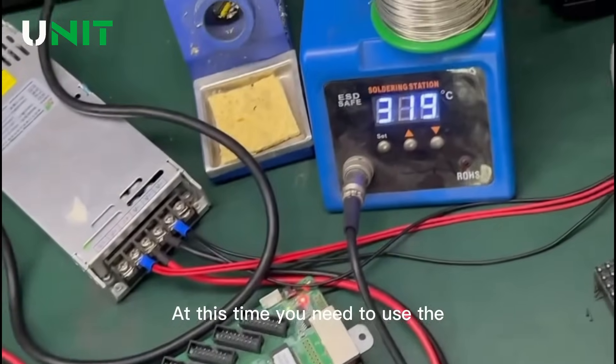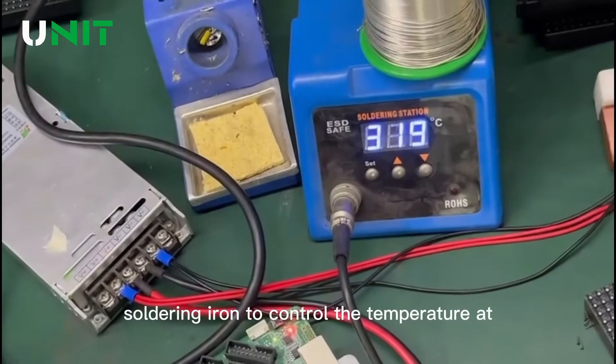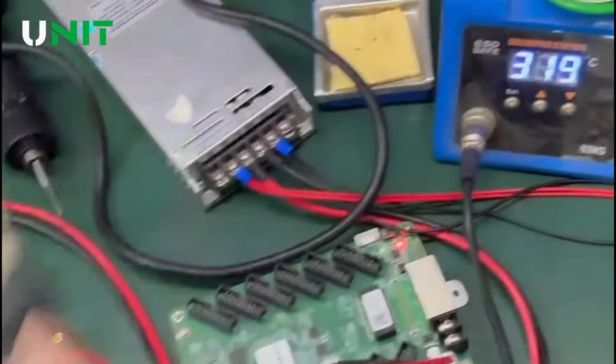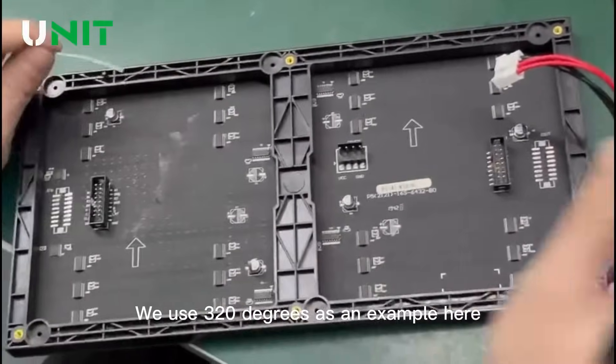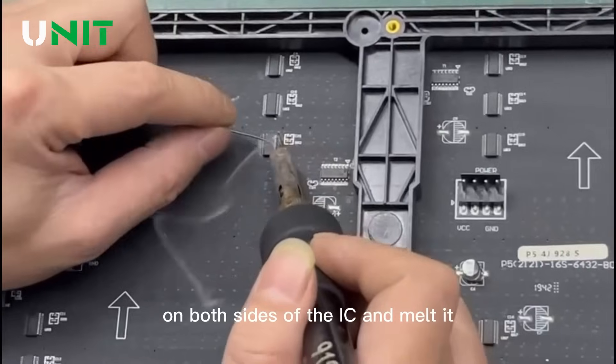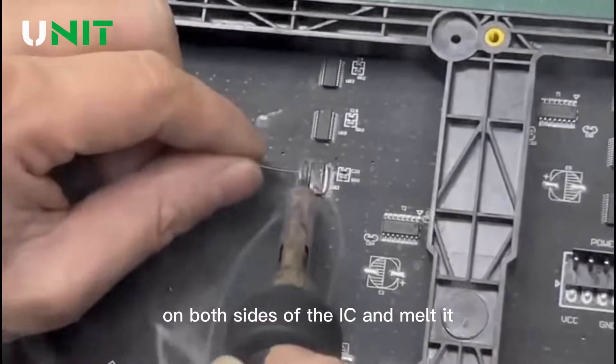At this time, you need to use a soldering iron to control the temperature at 300 to 330 degrees. We use 320 degrees as an example here. First, use a soldering iron and add tin on both sides of the IC and melt it.